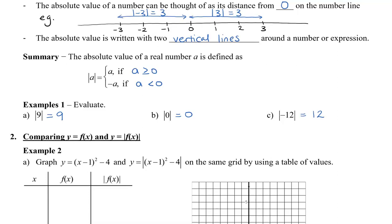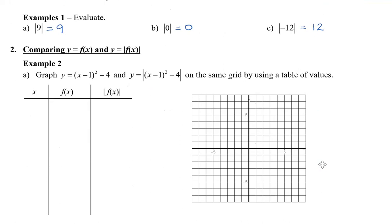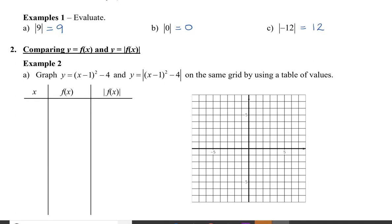In this next part, we're going to compare what a graph looks like compared to its absolute value. Here we have y equals x minus 1 all squared minus 4. We're going to start by using a table of values to graph this parabola. You can pause the video here to fill in the table yourself. I'm going to use x values: negative 2, negative 1, 0, 1, 2, 3, and 4, because the vertex is at (1, negative 4).